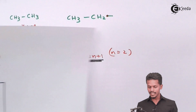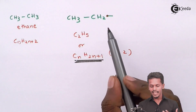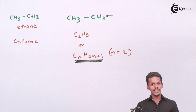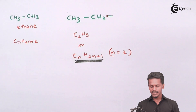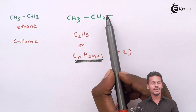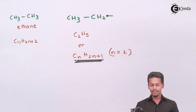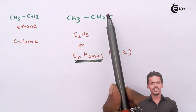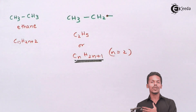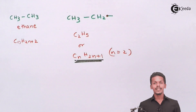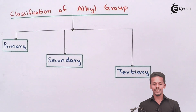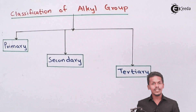The group drawn earlier, CH₃CH₂, is basically an ethyl group, also called an ethyl radical. The extension on the alkyl group means it can be joined with any other atom or species to complete a bond. Alkyl groups are of 3 types: primary, secondary, and tertiary. Let us discuss each individually.